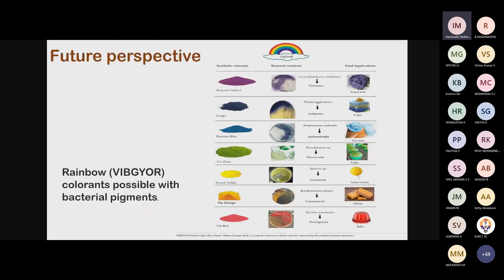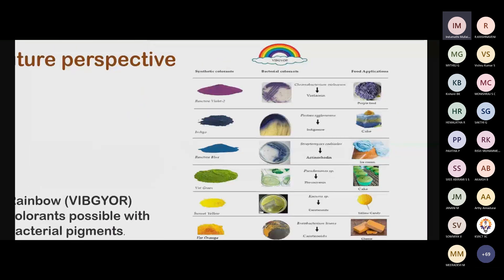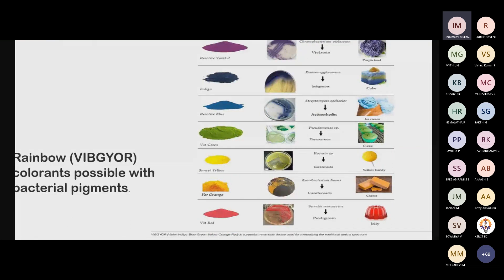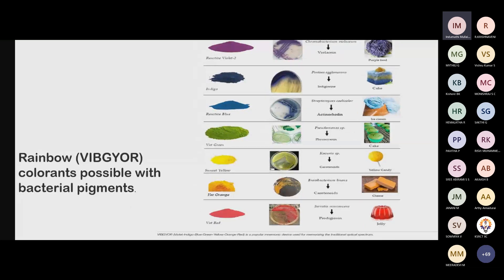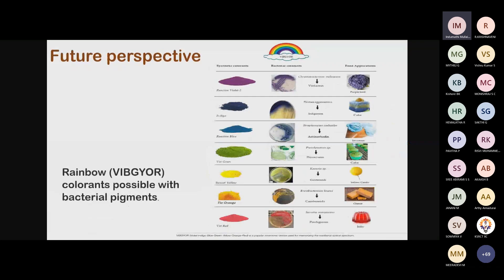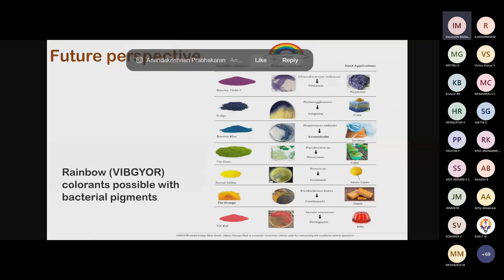What is the future perspective? As you know VIBGYOR — the rainbow colors. Through further research and identification of new microorganisms, we can extract all the colors: violet, indigo, blue, green, yellow, orange, and red. Red is already commercially available and violet is said to be commercially available as well. We can pursue the remaining colors through different fermentation and downstream processing techniques. This is a great opportunity for young researchers — I hope some of you will incorporate knowledge about microbial pigments into your research.